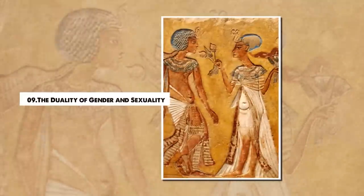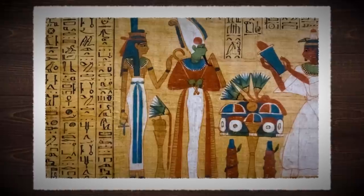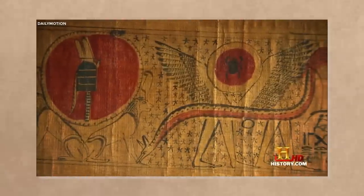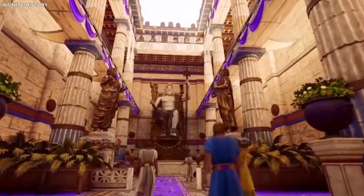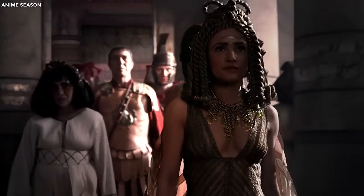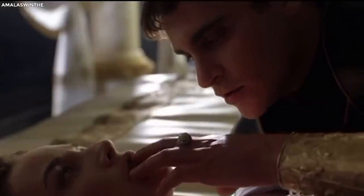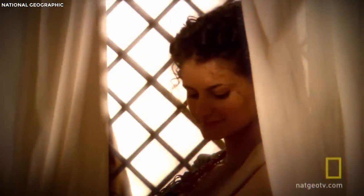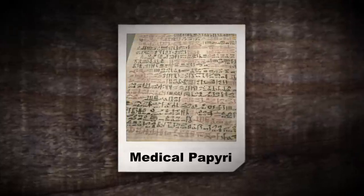9. The Duality of Gender and Sexuality. Ancient Egyptian society was characterized by a certain level of gender duality. Men and women had distinct roles, but shared equally in religious, social, and economic life. This duality extended to their understanding of sexuality, wherein sex was considered a mutual act, integral to the balance and harmony of life. Gender roles were not as rigid as in some other ancient societies. Women had considerable rights and could serve in significant positions like being priestesses, scribes, and even pharaohs, as in the case of Hatshepsut. Women's sexual needs and desires were acknowledged, as evident from the various contraception methods and the discussions about fertility and sexual health in medical papyri.